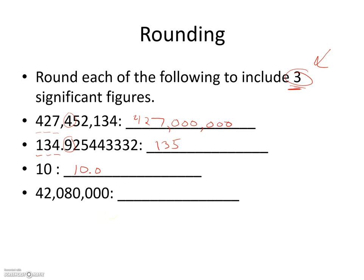For 42,080,000 rounded to three sig figs: we keep the 4 and 2. The third significant digit is that zero between the nonzero numbers, which is significant. We round it based on the next digit, which is 8. Since 8 is greater than 5, we round up, making it 42,100,000.